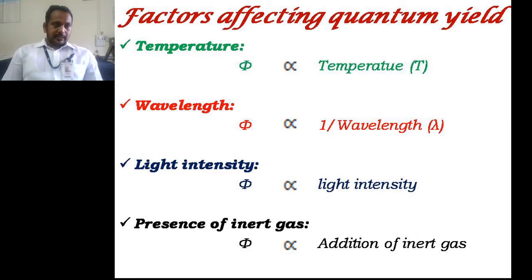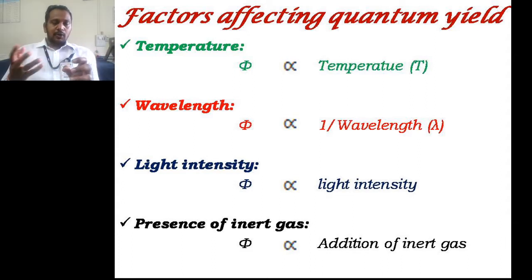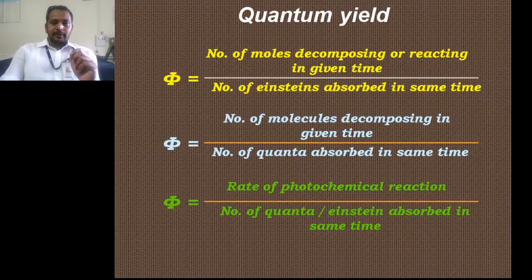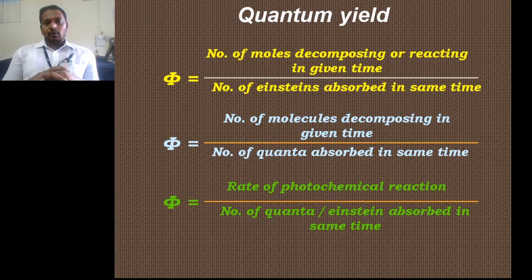In the last video we discussed the Stark-Einstein law, which states that each molecule of a reacting system absorbs a single photon or quantum of radiation. If this law is valid, the quantum yield should be unity, because one molecule absorbs one photon, giving phi = 1/1 = 1. For an ideal reaction that obeys the law of photochemical equivalence or the principle of quantum activation, the value of phi should be unity.